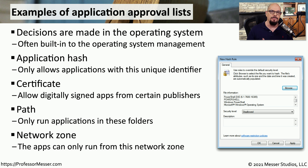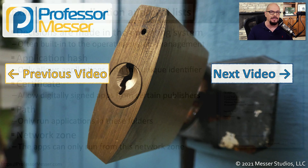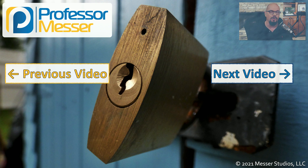For example, our internal network is commonly designated as a private zone, and the internet side is usually the public zone. We could set a policy that says any applications executing or running from private zone devices are allowed, and any that are coming from a public zone would be prohibited.